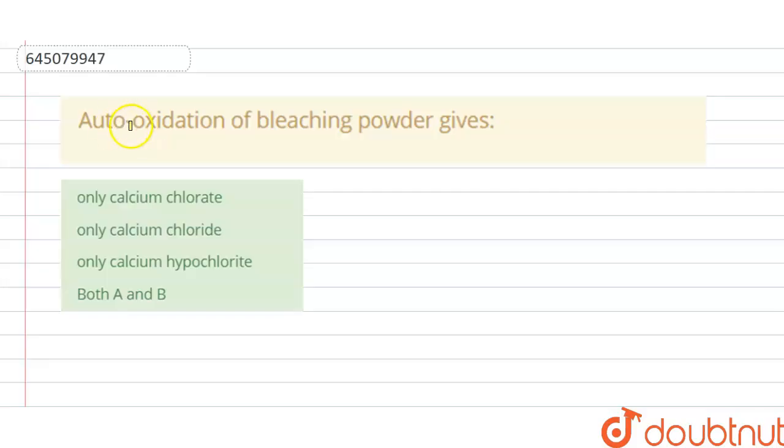Hello students, today our question is auto-oxidation of bleaching powder gives ABCD, options are given here. So we have to choose the correct option.